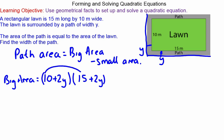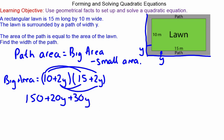Multiplying out (10 + 2y)(15 + 2y) gives 150 + 20y + 30y + 4y², which works out as 150 + 50y + 4y².